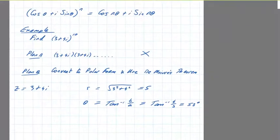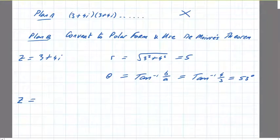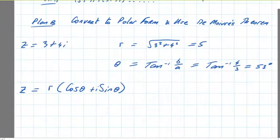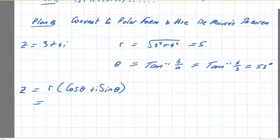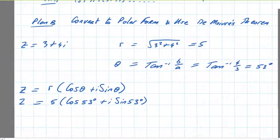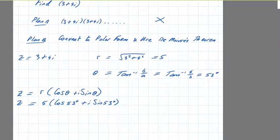And now we can write z in polar form. Z is equal to r, write the formula first, cos theta plus i sine theta. And just fill in r and theta now. R is 5, and cos 53 degrees plus i sine 53 degrees. And there's your number in polar form. That's the first step, convert to polar form.